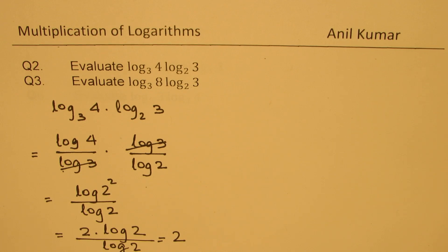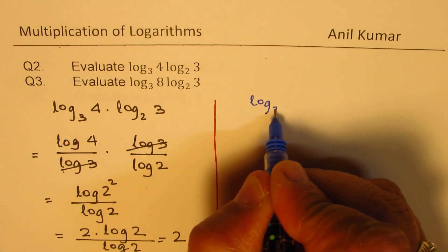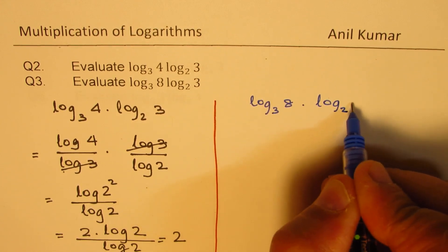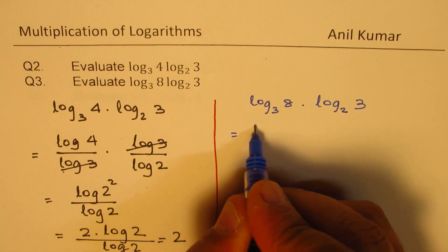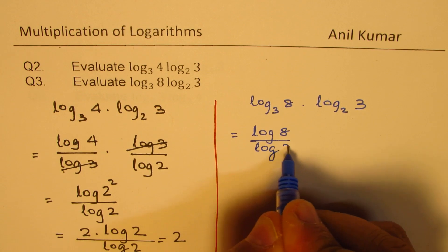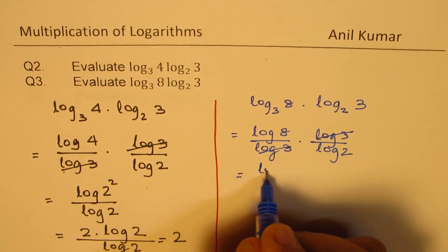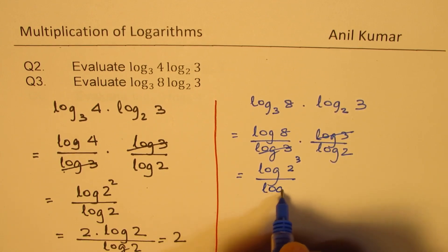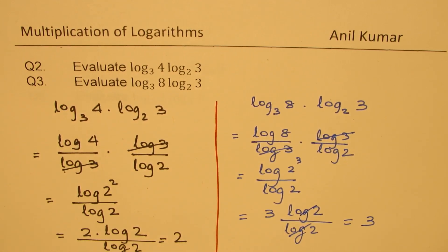You can pause the video, solve question number three, and then look at my solution. Question number three is log to the base 3 of 8 times log to the base 2 of 3. Since 8 is 2 to the power of 3, changing the base to 10 gives log base 10 of 8 over log of 3, times log of 3 over log of 2. The log 3 terms cancel, leaving log base 10 of 2 cubed over log base 10 of 2, which equals 3.